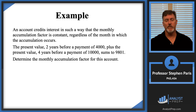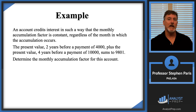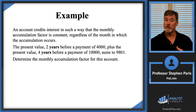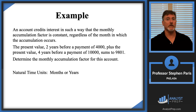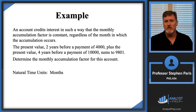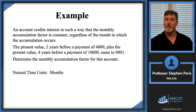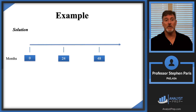The problem says the present value two years before a payment of four thousand, plus the present value four years before a payment of ten thousand, sums to 9801, and we're asked to calculate the monthly accumulation factor. I see years in the problem but I'm asked for the monthly accumulation factor, so natural time units would be either months or years. Let's choose months. If I pick months, the four thousand payment two years later would be at time 24 on my timeline, and four years later would be time 48.